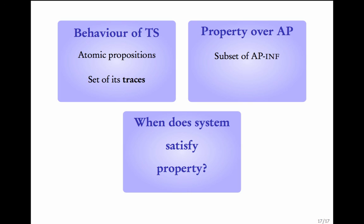We have seen three important things: the behavior of a transition system with respect to its traces, what a property over AP is, and when a system satisfies a property. This is a very important module. If you are not clear with any of these concepts, I would urge you to review them before proceeding to the next module. The ideas are simple: understand what traces are, what a property is — it is just a subset — and the system satisfies the property if its trace set is included in the subset given by the property.